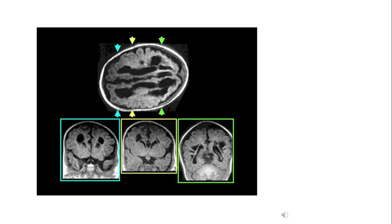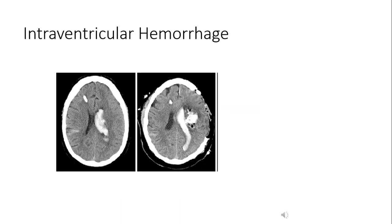This is a CT scan of an infant with PVL. The ventricles full of CSF have a hypointense signal — the color is black. You can appreciate the cystic areas around the ventricles with a similar intensity to the CSF, owing to loss of white matter fibers and replacement by CSF. This is another CT scan depicting intraventricular hemorrhage, where you can see the blood filling the ventricles and also involving the brain tissue surrounding the ventricles.